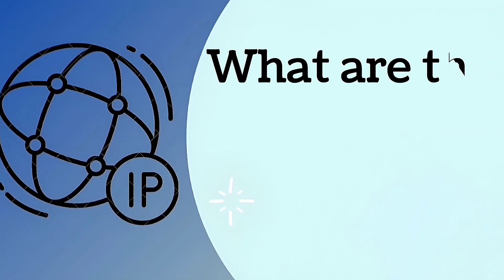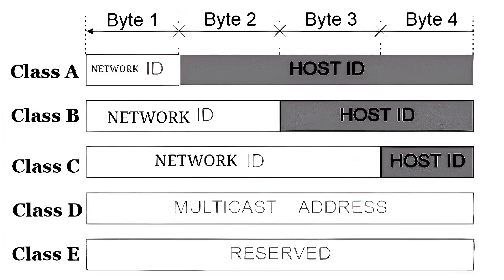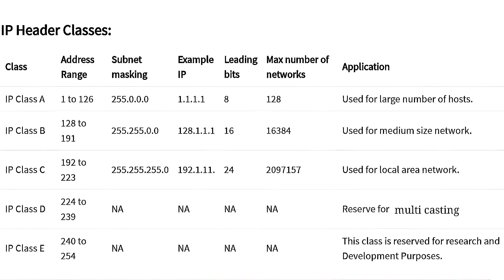What are the classes of IP addresses? The addressing method divides IPv4 into 5 separate classes: Class A, Class B, Class C, Class D, and Class E. Class A is used for a large number of hosts. Note that the number 127 is reserved for loopback addresses.